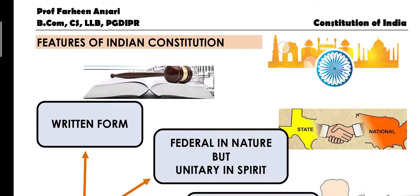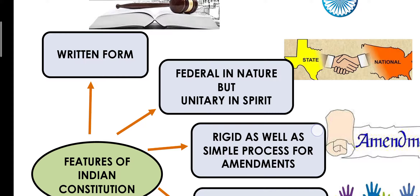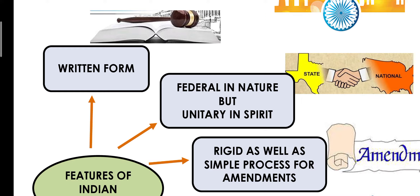Let's talk about the features of the Indian Constitution. First, our Indian Constitution is in written form. Take the example of England — there is no written constitution there; they follow the rule of natural justice. But in India, we have a written form of the Indian Constitution with articles and schedules. For example, if my fundamental right of speech under Article 19 is infringed, I can move to the court citing that specific article because it is clearly written.